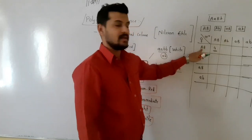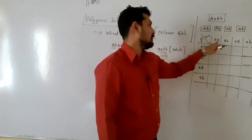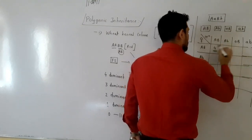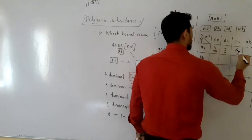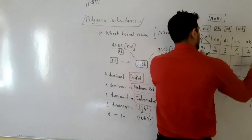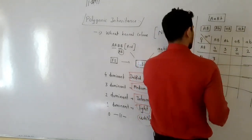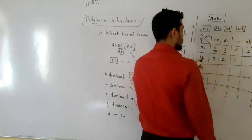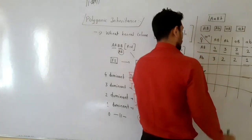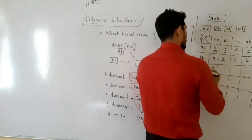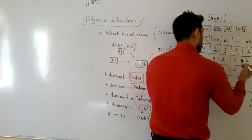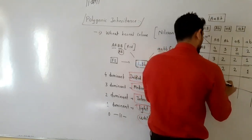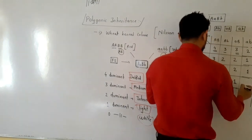Instead of writing all gamete combinations, we count the number of dominant genes in each offspring. From the 16 combinations: one offspring has four dominant genes, some have three dominant genes, some have two dominant genes, some have one dominant gene, and one has zero dominant genes.